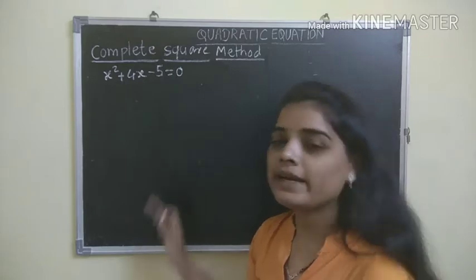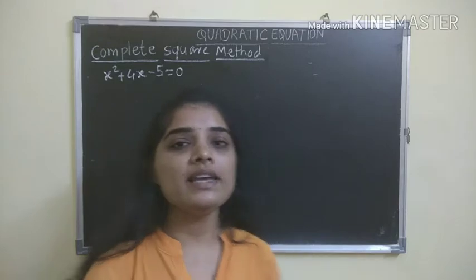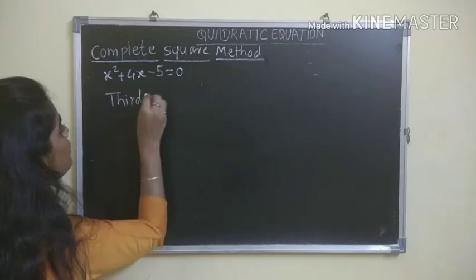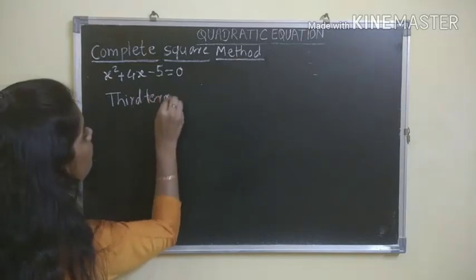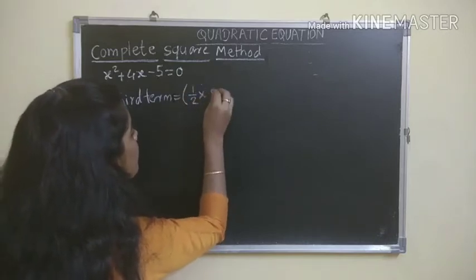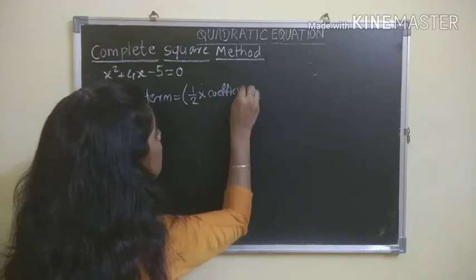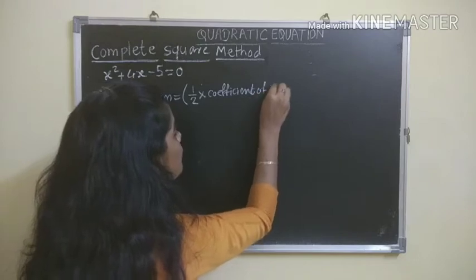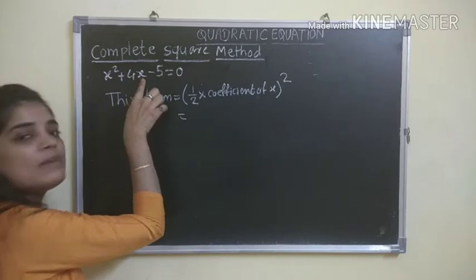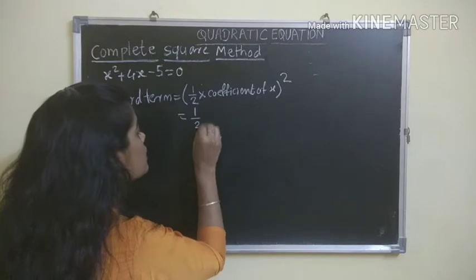To solve this sum, third term is equal to (½ multiplied by coefficient of x), the whole square. Now in this equation, the coefficient of x is 4.